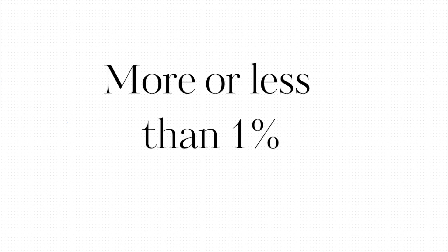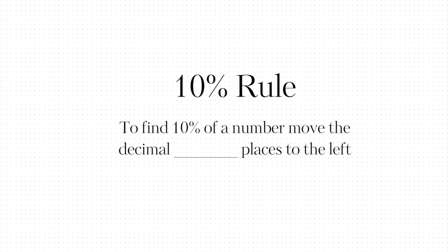First of all, what you've learned already is how to find 10% of a number by using the 10% rule. To find 10% of a number, move the decimal one place to the left. So let's say if we have the number 780 — the decimal is always at the end, so to get 10% we move it one spot to the left.